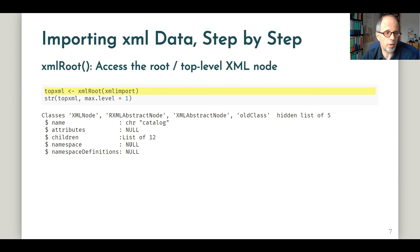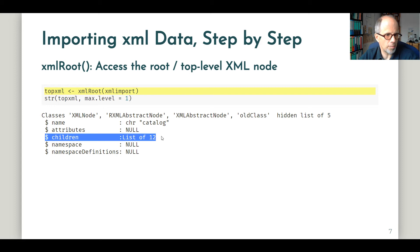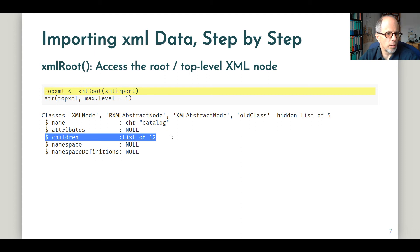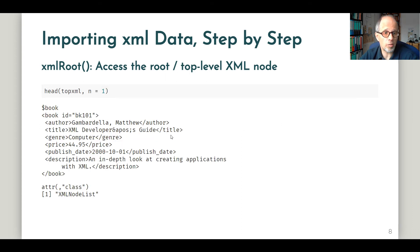Next, we look at the `xmlRoot` function to access the root or top-level XML node. Again, I display the structure and again we have a nested list. We have this slot children and it says list of 12. Since we know we have 12 books, we can assume that the books are stored in this slot children. We can use the `head` function on this object — and it displays the first book. I limited the number of books to display to one using the `n` argument in the `head` function. So it still looks very much like XML and not like an R data frame structure that we would like to work with.